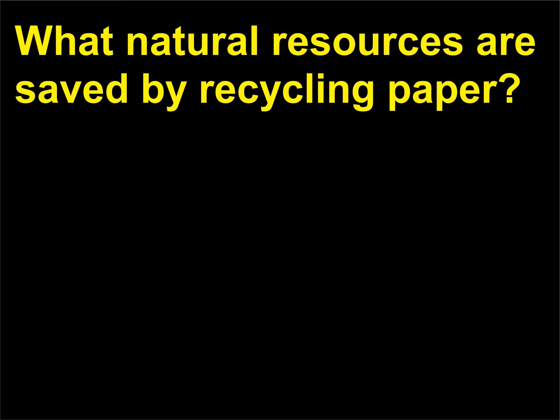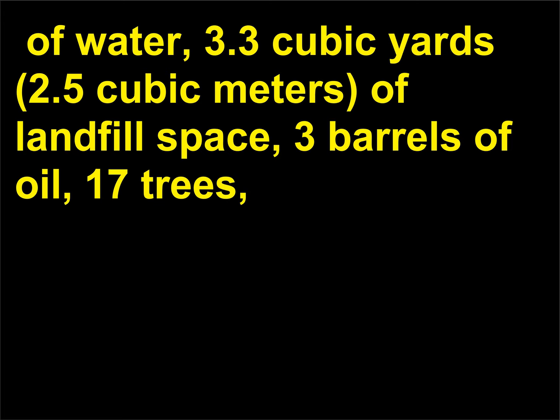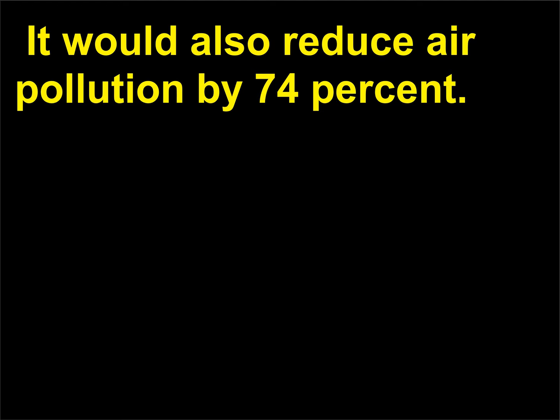What natural resources are saved by recycling paper? One tonne, 907 kilograms, of recycled waste paper would save an average of 7,000 gallons, 26,460 liters, of water; 3.3 cubic yards, 2.5 cubic meters, of landfill space; 3 barrels of oil; 17 trees; and 4,000 kilowatt-hours of electricity — enough energy to power the average home for six months. It would also reduce air pollution by 74 percent.